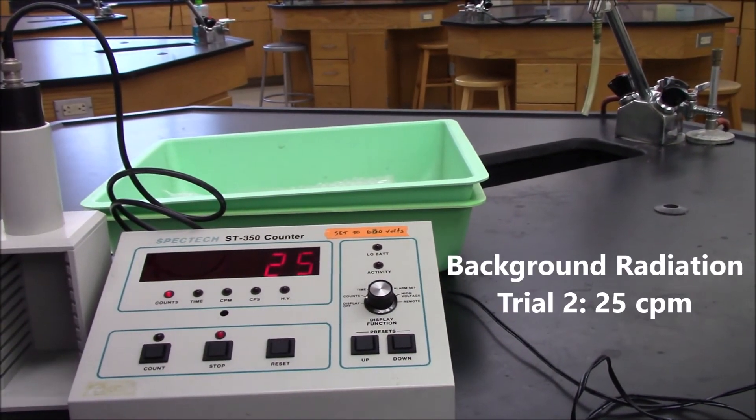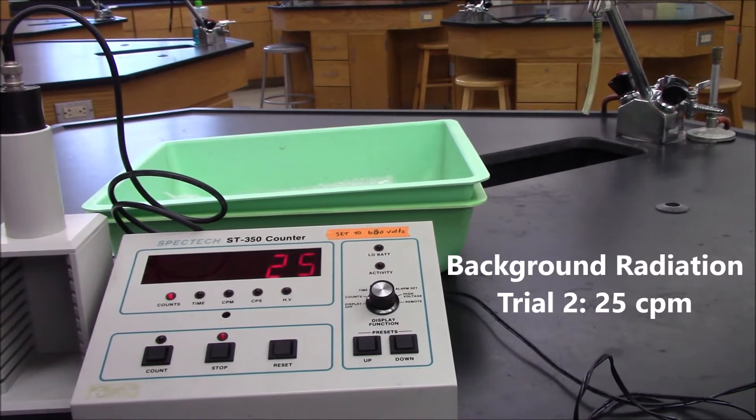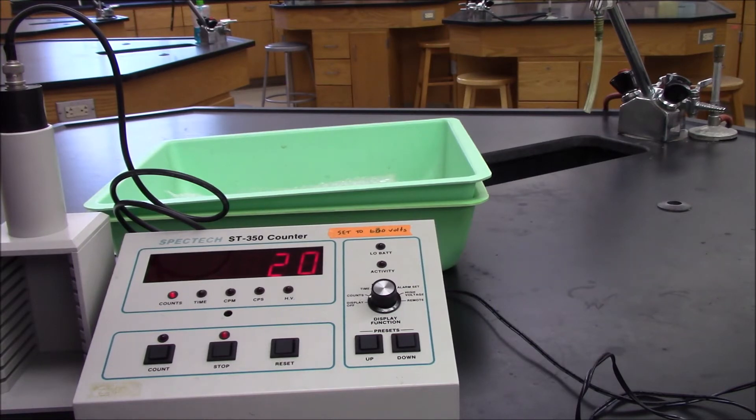So there's trial number two, 25 counts per minute. Now we'll do trial number three. So we're just going to average those three and round to the nearest whole number, and we'll call that our background radiation for each trial.